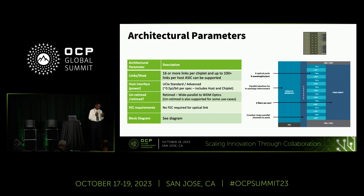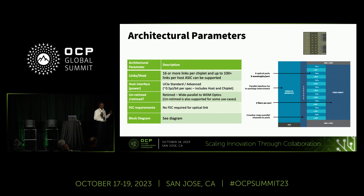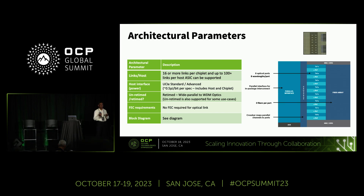Our solution uses 32 Gbps NRZ signaling on the optics per wavelength. Rather than going to PAM4 and added complexity on the optics side, we use lots of wavelengths with simple modulation — that's how we get high throughput and throughput density. There's no FEC requirement, which is important since latency matters for many of these applications. UCIE also doesn't require heavy error correction, though there is a retry mechanism. Bit error rates reach 10^-27 in some cases and 10^-15 in the worst case.